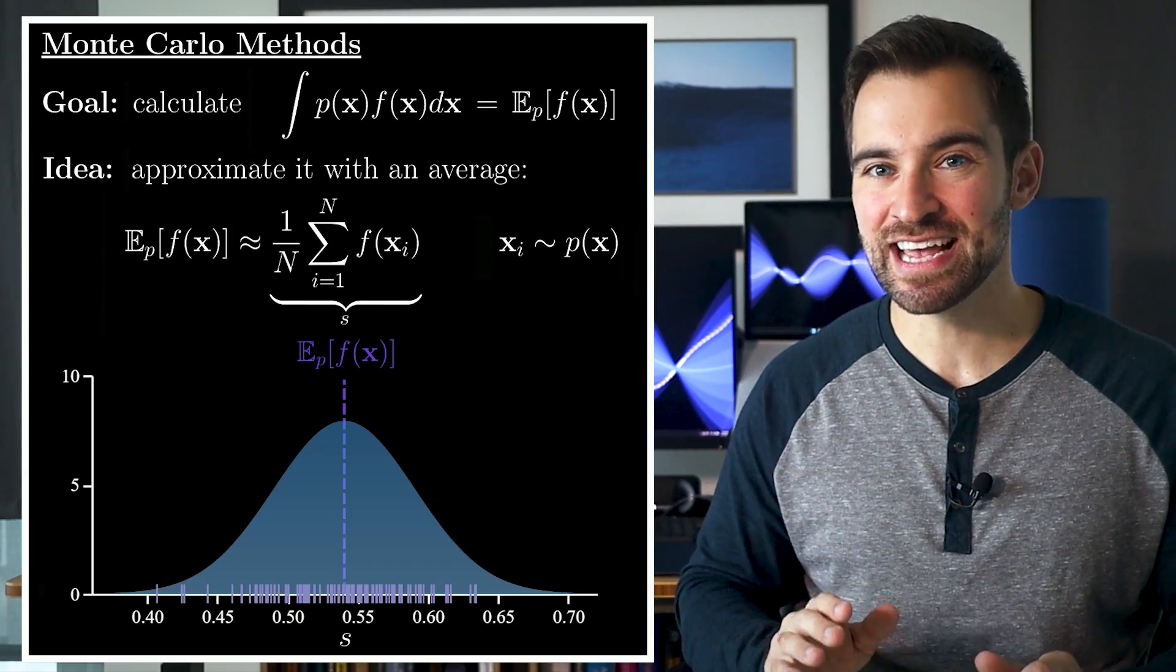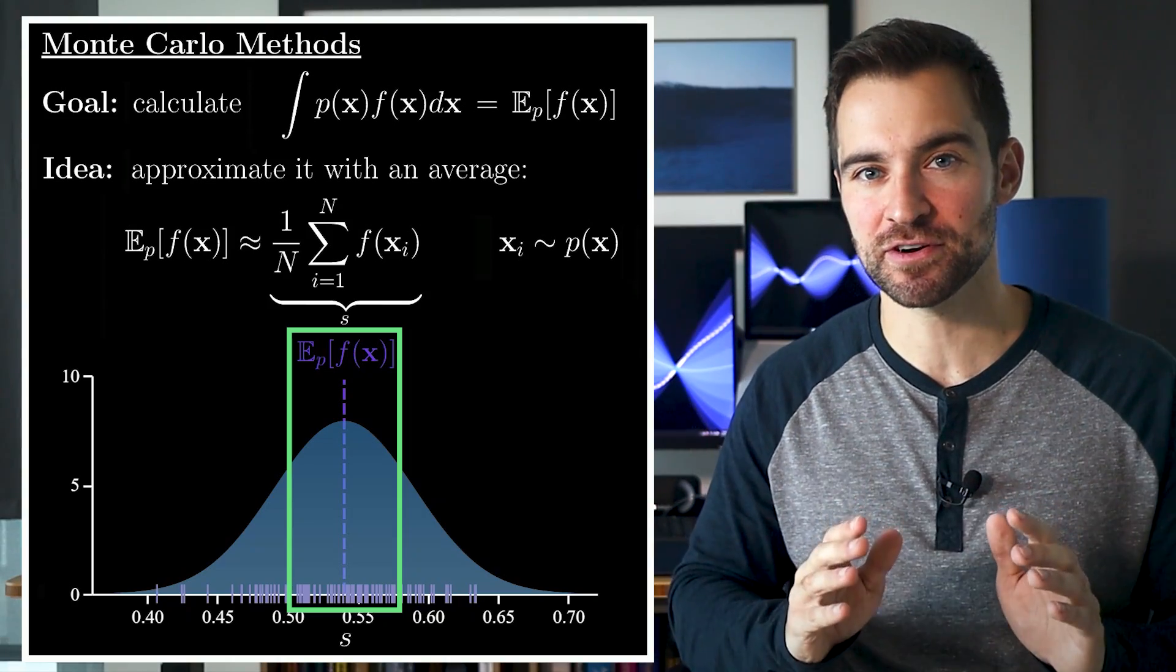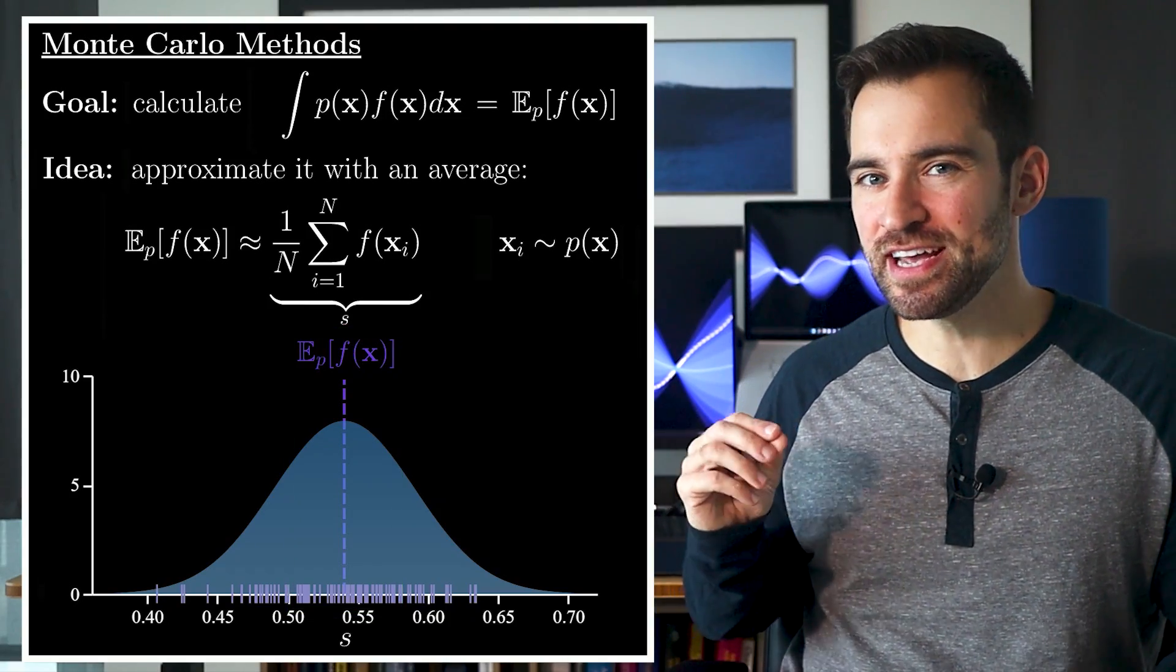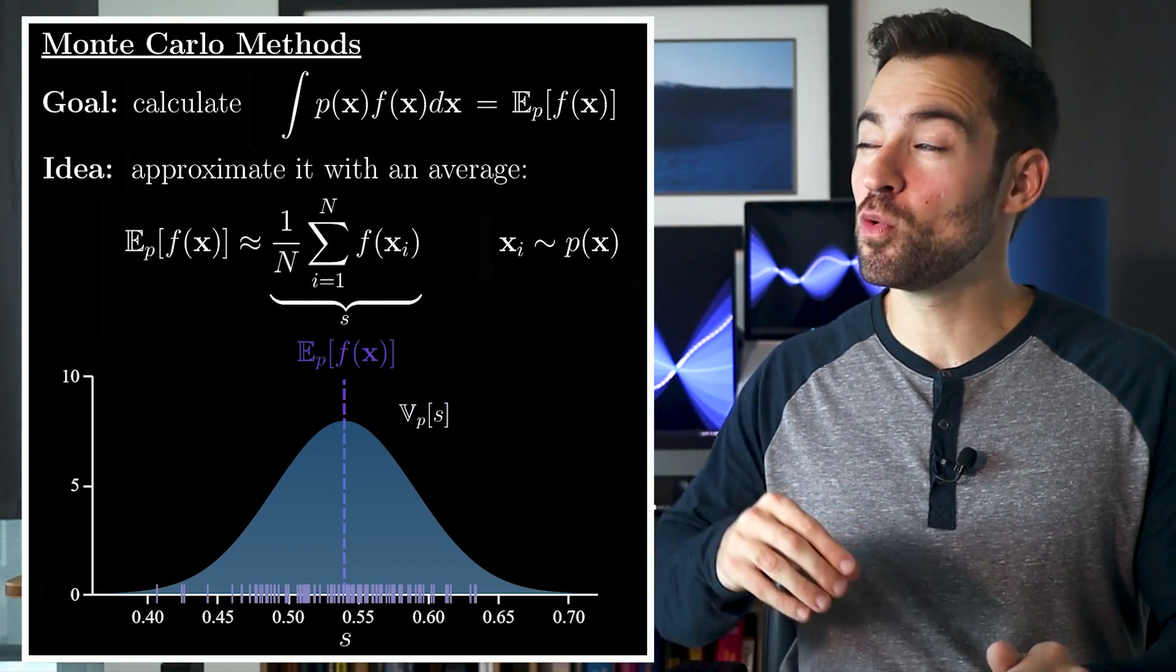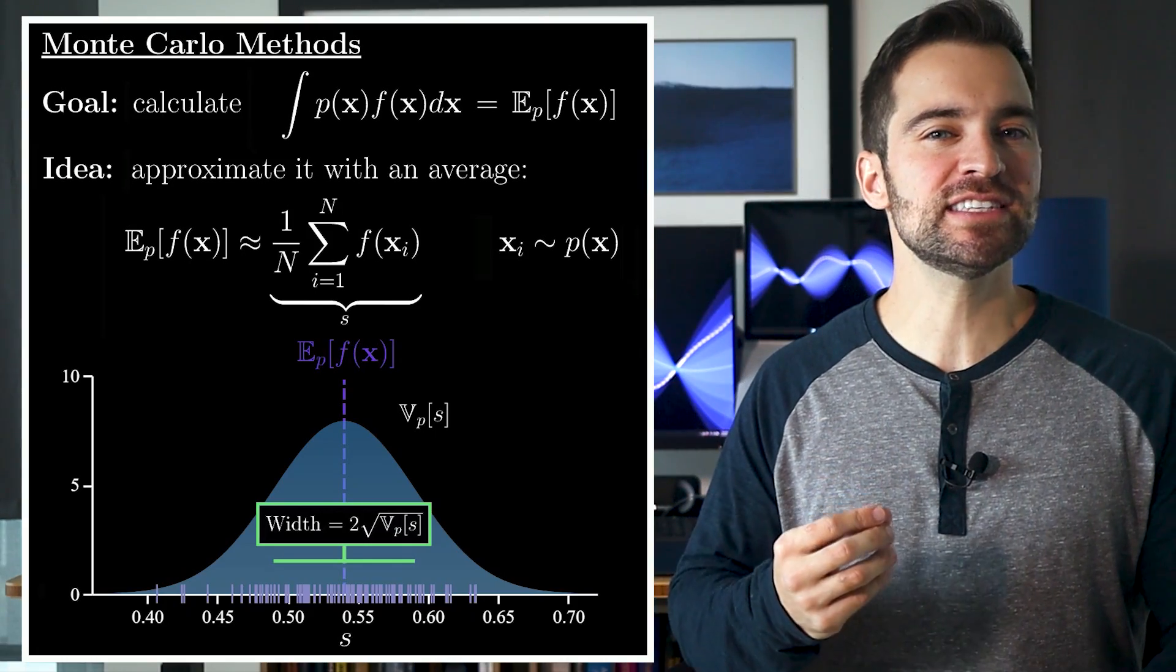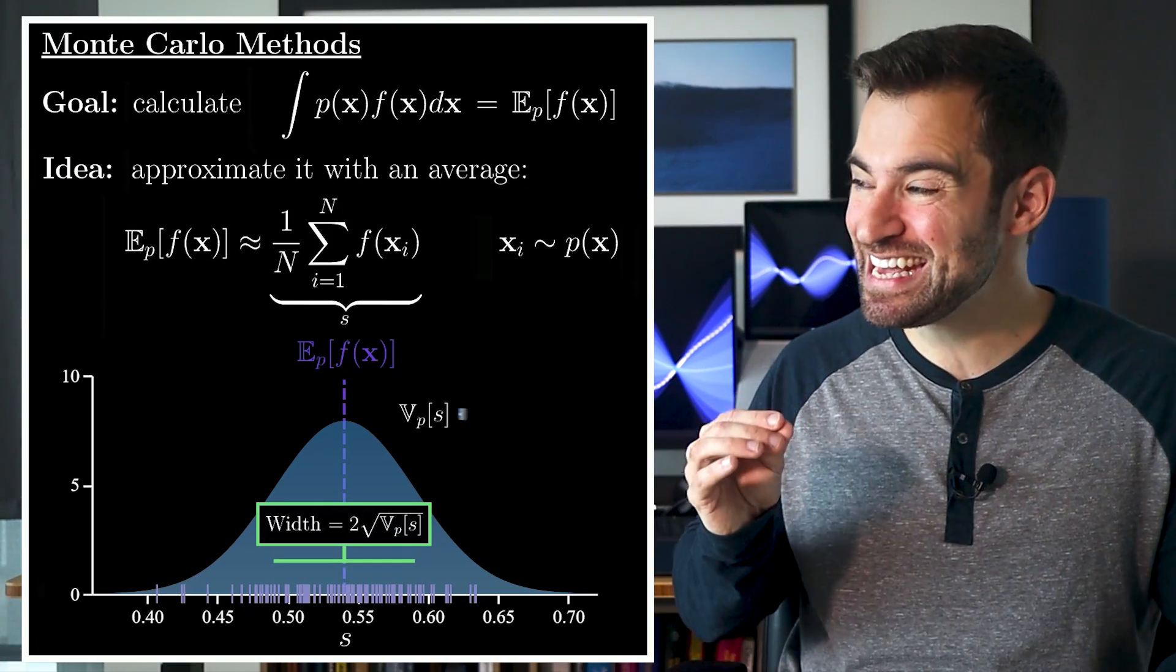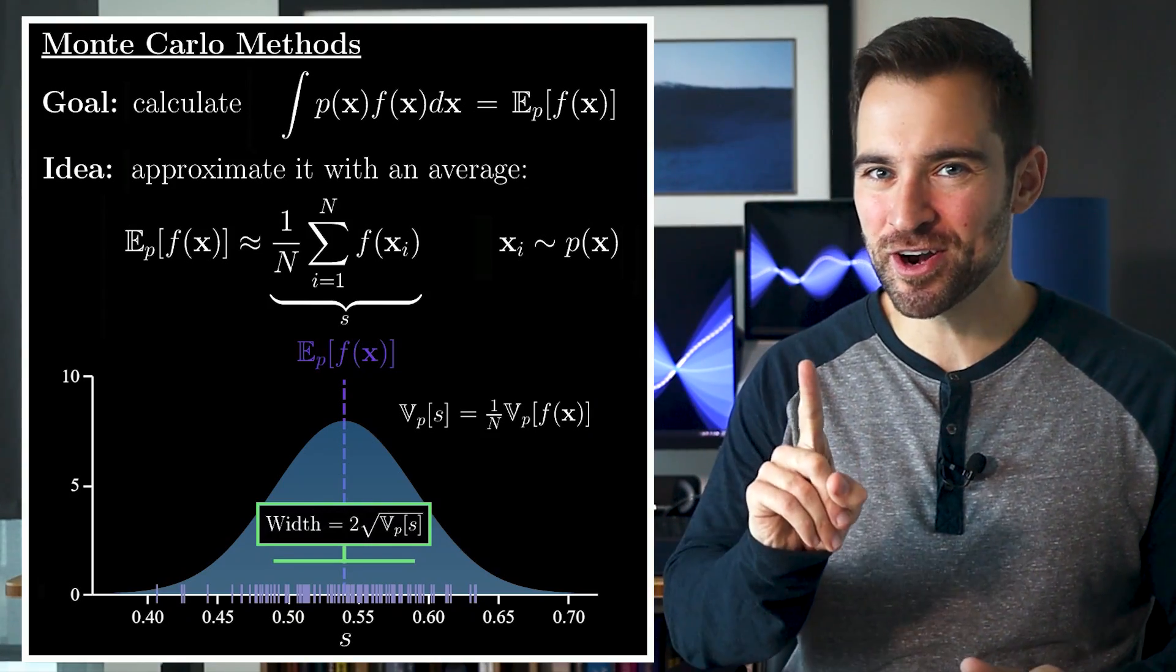Okay, the first thing to notice here is the distribution is centered on the true expectation we're after. This is a critical property. When we have it, we say our estimate is unbiased. Also, looking at this, we can see that the variance of s, something which tells you about the width of this distribution, matters a lot. It gives us a sense of how off a single estimate is likely to be from the truth. Now, it turns out the variance of s is the variance of f(x) scaled down by n.